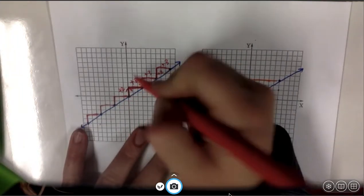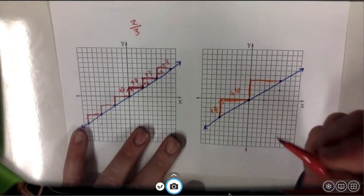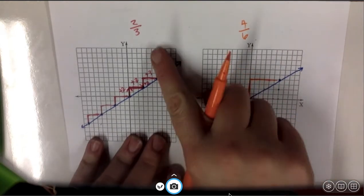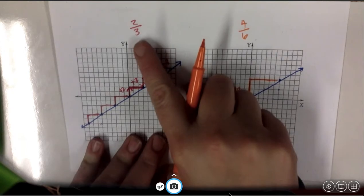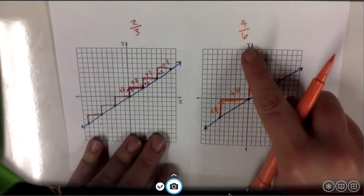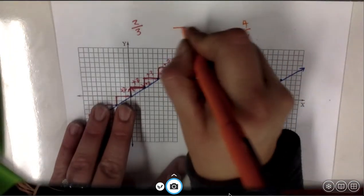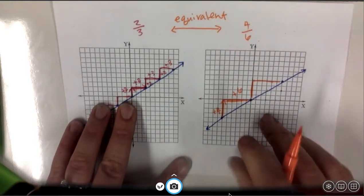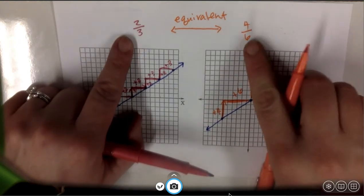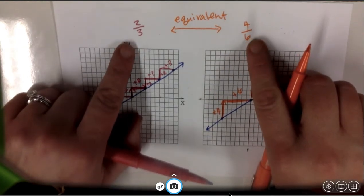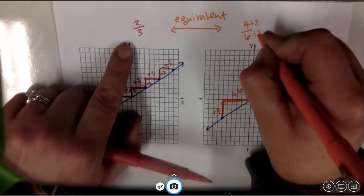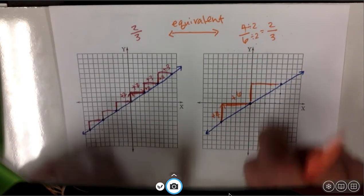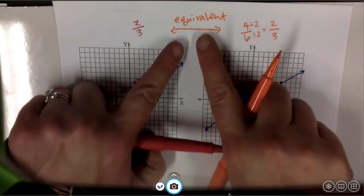So I can say 2 over 3 is my slope for this, but this one is 4 over 6. Hopefully you're looking at these two fractions and saying, 'Ms. G, this fraction times 2 on the top and the bottom gets me this fraction.' Good. That means these fractions are equivalent. If I were to simplify them into their simplest form, which this one I'd have to divide by 2 on the top and the bottom, I'd get the exact same slopes: 2 over 3, 2 over 3. They are equal to each other. They are equivalent.